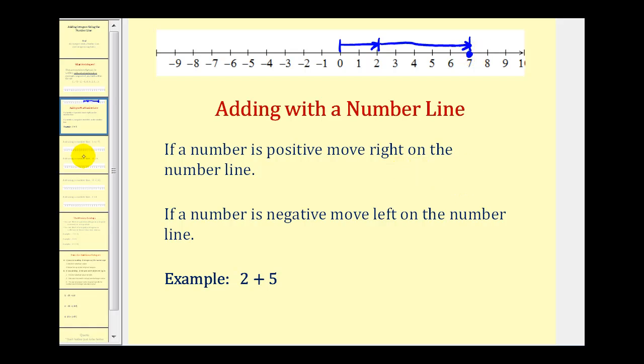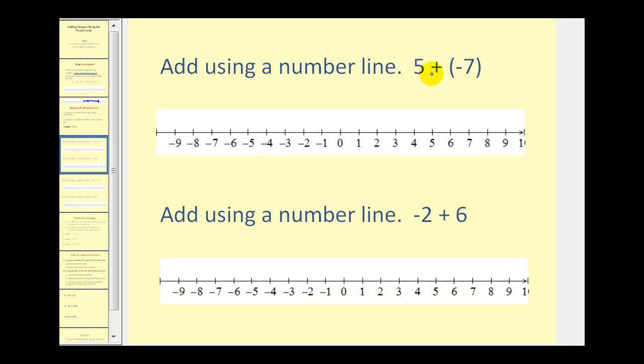Let's take a look at some additional examples. Here we have five plus negative seven. So we'll start at zero and move five units to the right because this five is positive.